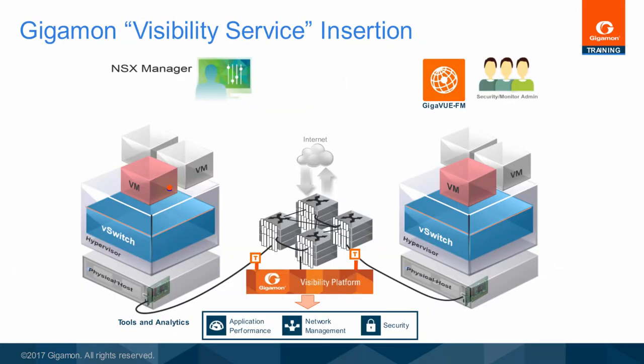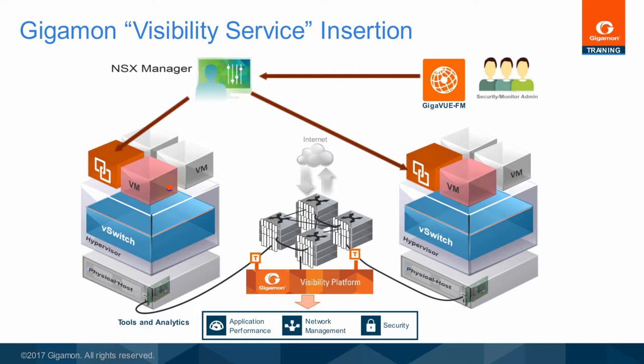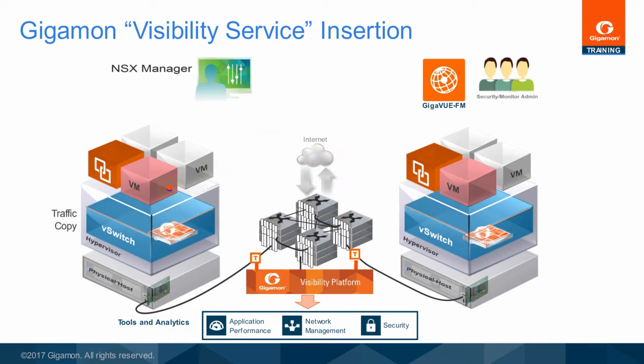Dynamic service insertion works like this: Fabric Manager registers itself as a service in the NSX Manager. NSX Manager then deploys a GigaView VM instance on all of the hosts within a software-defined data center, and will also push monitoring policies you have defined in Fabric Manager. If you define a policy for a set of VMs as part of an application, NSX Manager will include the traffic monitoring policy along with the new VMs as the capacity for that application expands within an application security group. NSX Manager deploys new VMs and topology as the application expands, applies the right traffic policies, and then NSX automatically copies the traffic for the visibility platform so it can be sent to monitoring tools using NetX features — all without any user intervention.